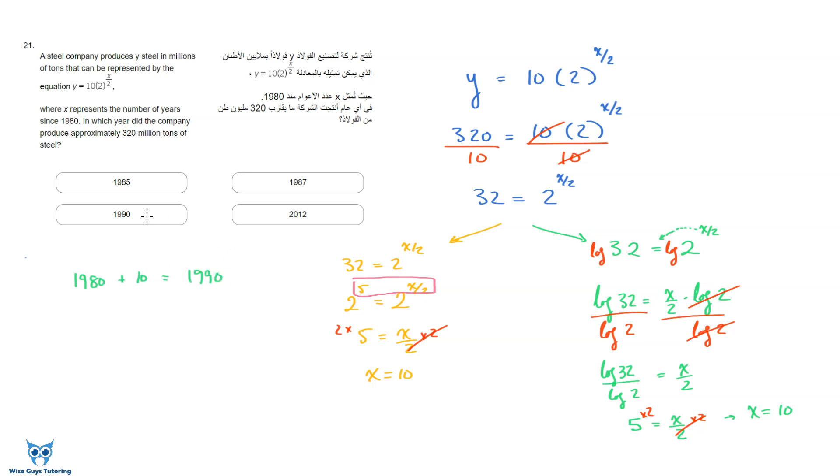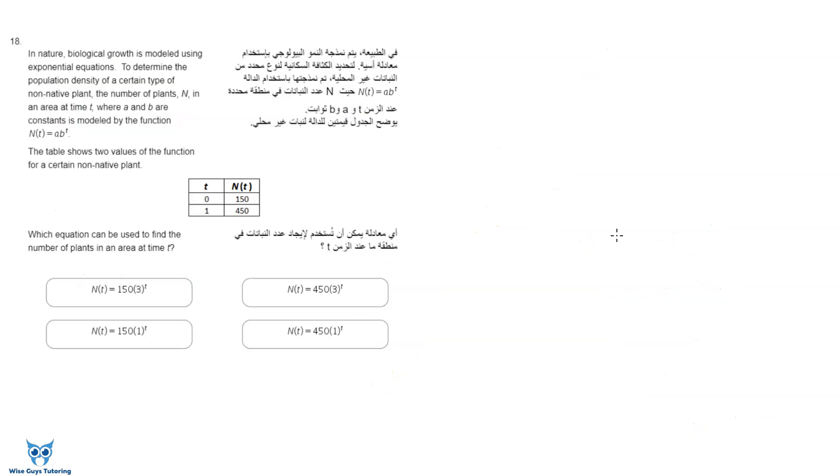In nature, biological growth is modeled using exponential equations. This one has a whole story. To determine the population density of a certain type of non-native plant, the number of plants n in an area at a time t, where a and b are constants, is modeled by the function n of t equals a times b to the t. The table shows two values of the function for a certain non-native plant. Which equation can be used to find the number of plants in an area at a time? So they gave it to us in a very generic form. They said n of t equals a times b to the t. And given a couple of points, they want us to solve for a and for b.